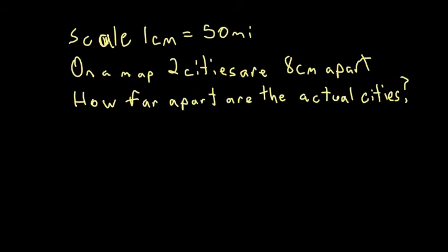Now I'm giving this scale factor again: one centimeter equals 50 miles. On a map, two cities are eight centimeters apart. How far apart are the actual cities? Again, you have to think: I'm given eight centimeters, eight is the smaller number, I have to make it into a bigger number. So in order to do that, I need to multiply. So I'm going to do 50 times 8. Eight times zero is zero, eight times five is 40, so I'd get 400. The two cities are 400 miles apart.